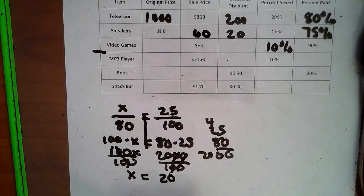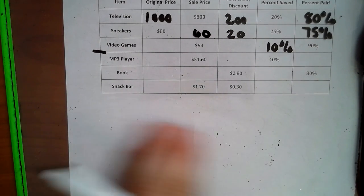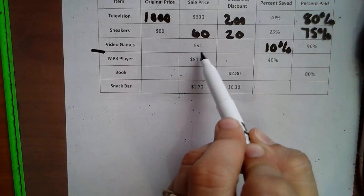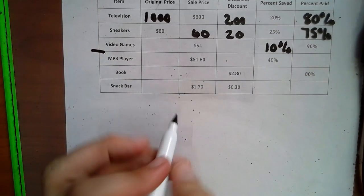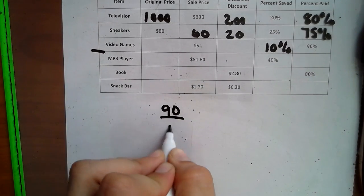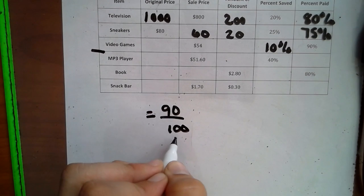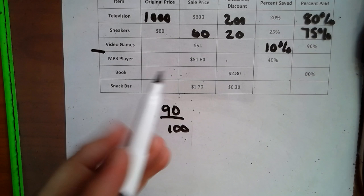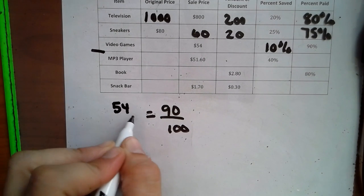So now we're on the video game question, and that's 10% is what we saved, and 90% is what we paid. But if you notice, we have the sale price. So here we can go 90 over 100, all percents go over 100, and the sale price is what percentage we paid. So that's the $54.